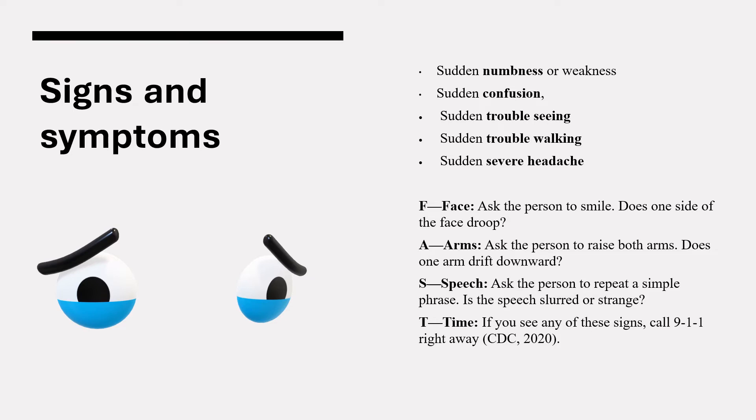The FAST acronym — fast acting can reduce the effects that brain damage can cause due to stroke. FAST stands for Face, Arm, Speech, and Time. If you think someone is experiencing a stroke, ask these questions: Ask the person to smile — does one side of the face droop? Ask the person to raise both arms — does one arm drift downward? Ask the person to repeat a simple phrase — is the speech slurred or strange? And Time: if you see any of these signs, call 911 right away.